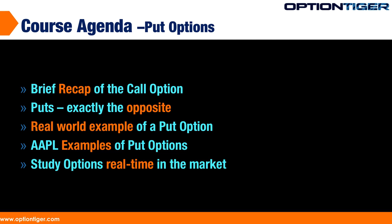The best way to understand put options is by using a simple example we've probably all used in our real lives, and that is insurance. Whenever we buy insurance, we are buying a put options contract. Think about it this way: if you bought insurance on your car for twenty thousand dollars and paid a premium of one thousand dollars for it, this is a put option. You've bought the put option contract, and the contract has been sold to you by the insurance company.